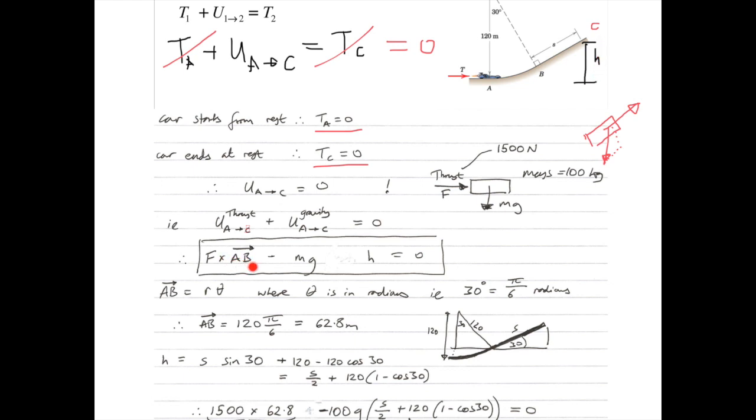Okay, so to compute the arc length AB, it's R theta. So we know theta is 30, we're looking to find AB, and we know that R is 120. We have to convert to radians, and we can get the expression to be just under 63 metres.